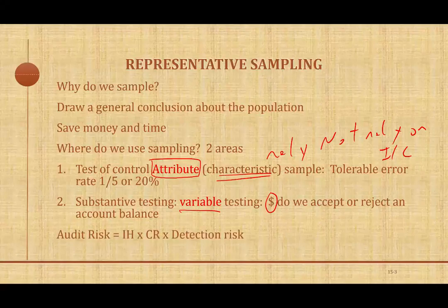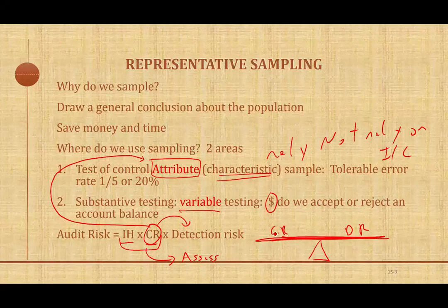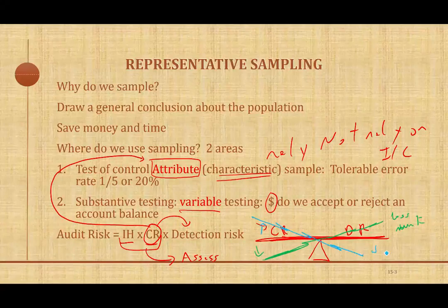Keep in mind the big picture: the audit risk model, which is audit risk equals inherent risk times control risk. Part of assessing control risk is to do attribute testing. When we assess control risk, it influences the amount of work we do with detection risk — there's an inverse relationship. If we conclude the company has less control risk, control risk goes down, detection risk goes up, meaning we do less work because we can rely on the system. The opposite is true: if control risk is high, detection risk goes down, and we do more work because we don't want to miss anything.